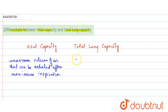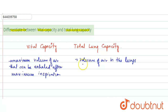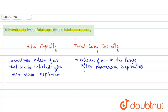Total lung capacity (TLC) is the volume of air in the lungs after maximum inspiration.